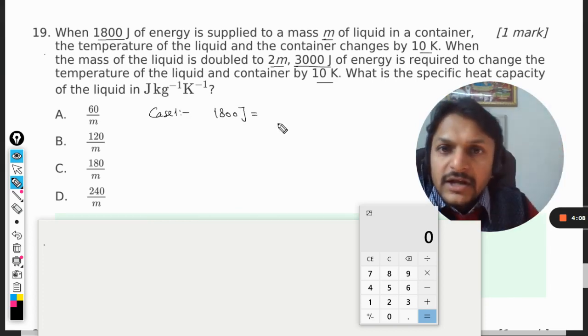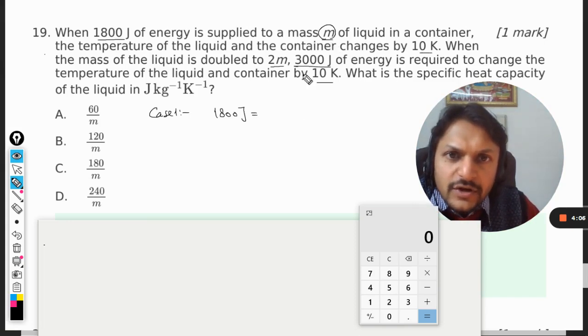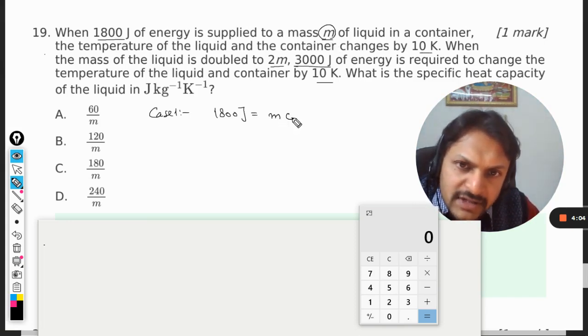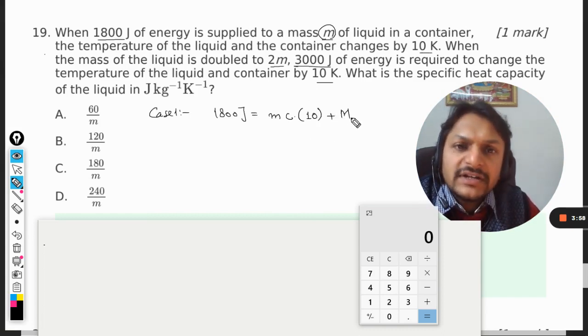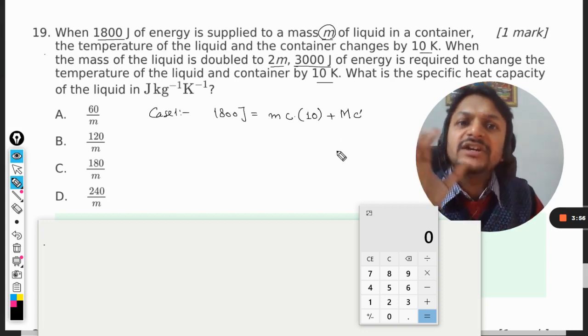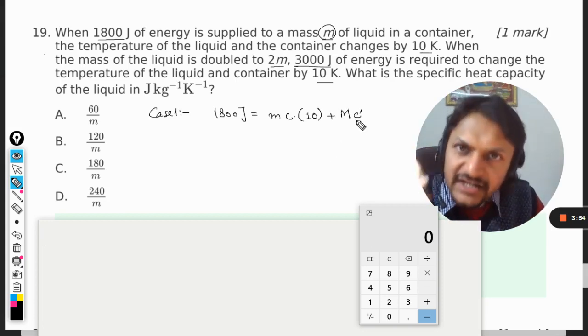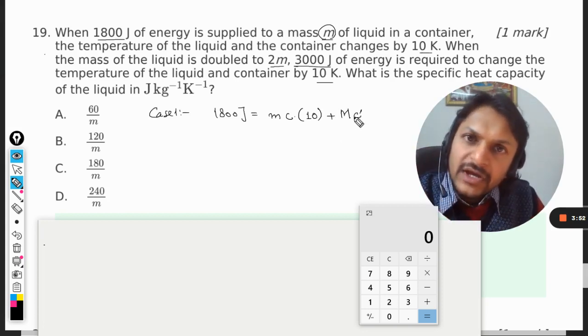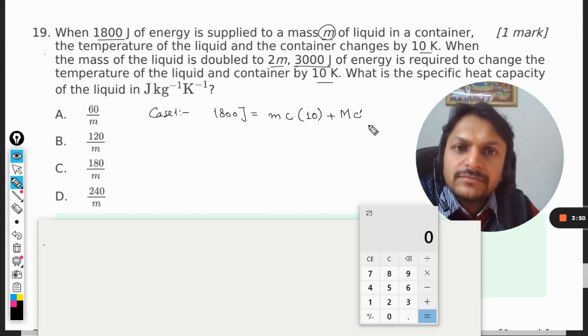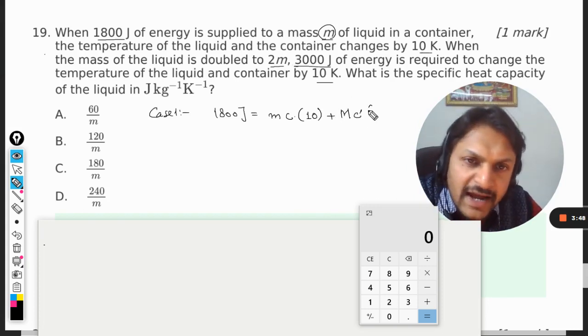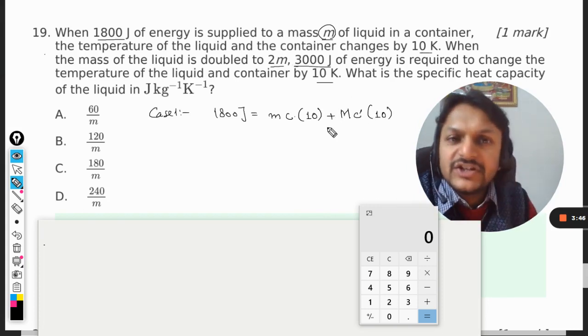So the liquid is of mass m, so it will be m·c, and the delta t will be taken as 10, plus M is the mass of the container, and let us say c' is the specific heat capacity for the container, and the temperature for that has also increased by 10 Kelvin, so delta t is 10.